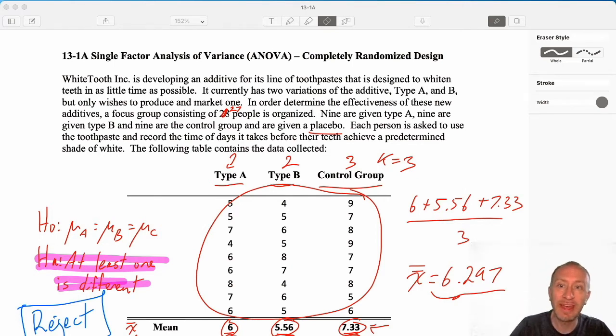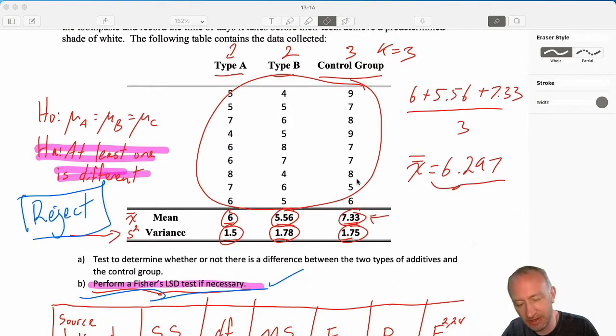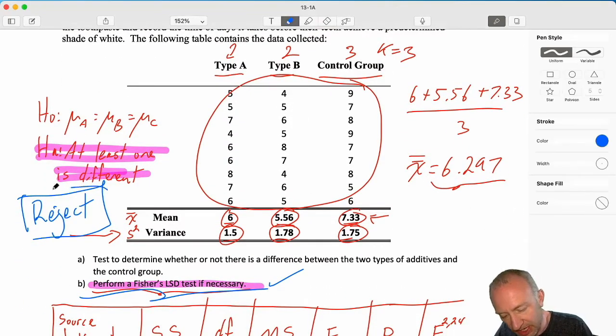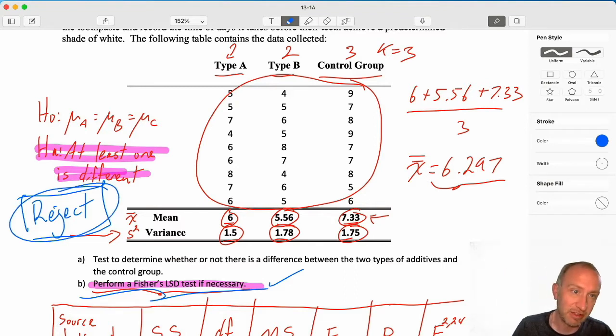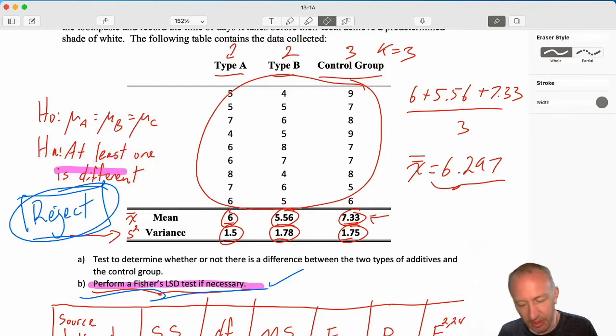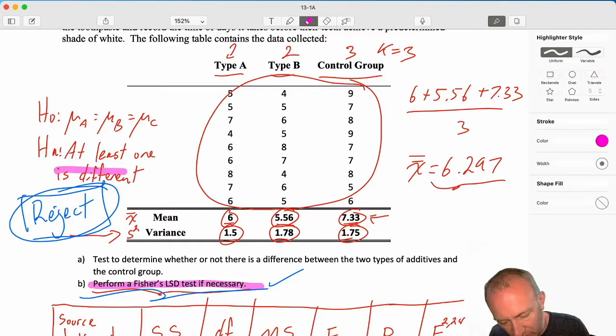We've run through this ANOVA exercise and we have found that we do have sufficient evidence here to reject that null hypothesis, which of course means that at least one of those samples are different from the other. So now we're going to find out which one is it.